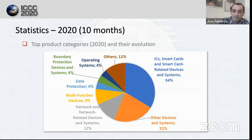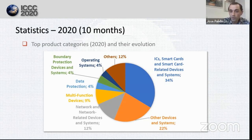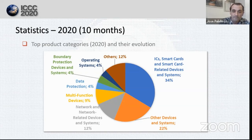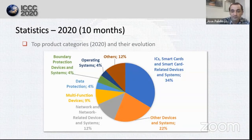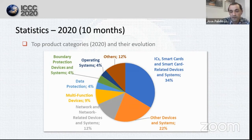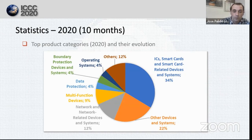Another interesting statistic is the product categories with the biggest number of certifications. We work with the same data categories defined in the product listing in the CommonCriteria Portal.org. The top category in 2020 has been integrated circuits, smart cards, and related devices. This is consistent with the use of the related CPP that we saw earlier. Network and network-related devices also have good relative numbers with 12% — many of them use the network devices collaborative PP. Multifunction devices, data protection, operating systems, and boundary protection devices were also quite frequent this year.